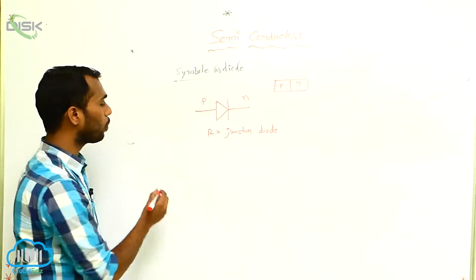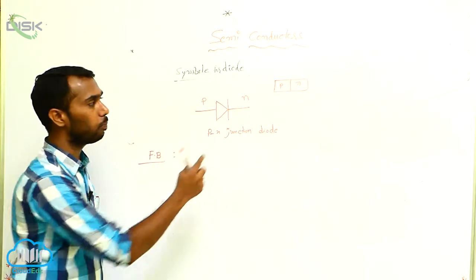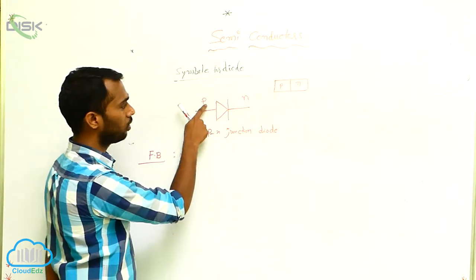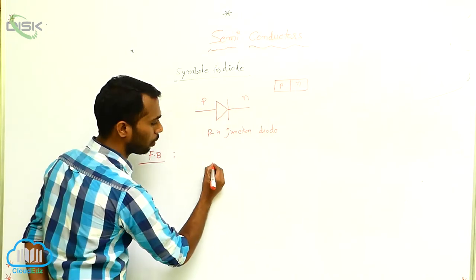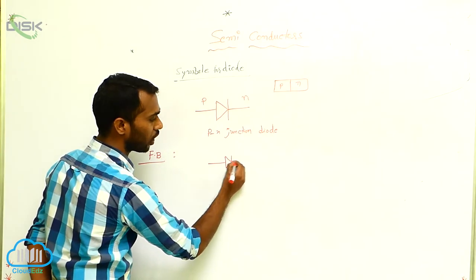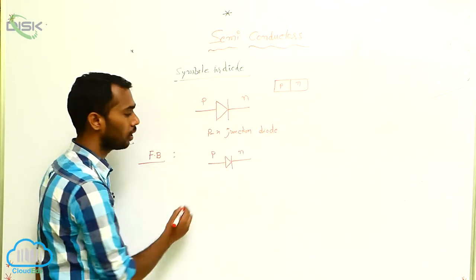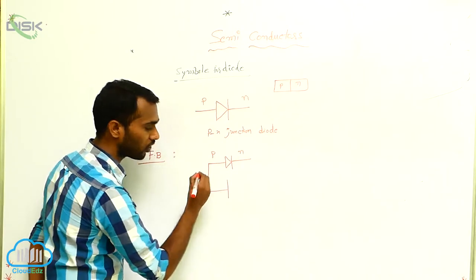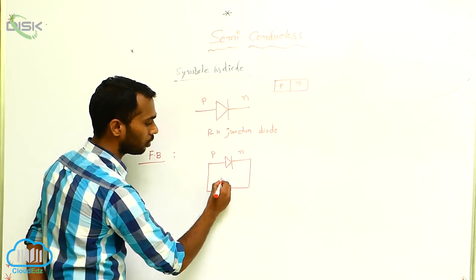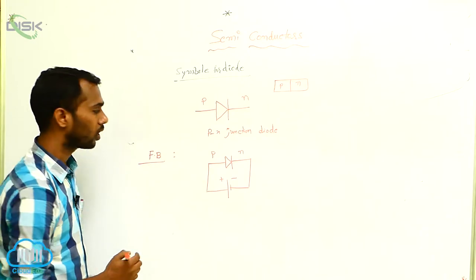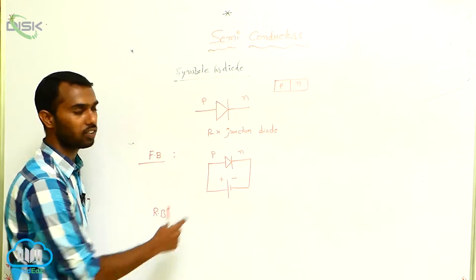What is forward bias? Forward bias means P is connected to the positive terminal and N is connected to the negative terminal. This is the P-N junction diode — this is the P-type and this is the N-type. P connected to the battery positive terminal and N connected to the battery negative terminal — this is the forward bias symbol.